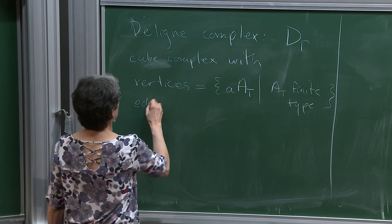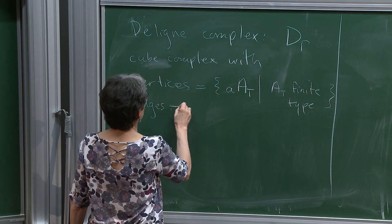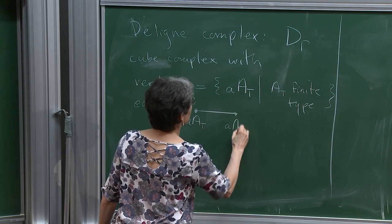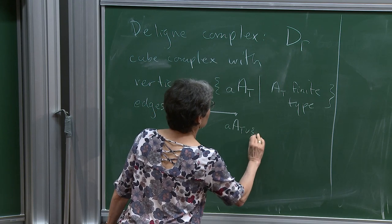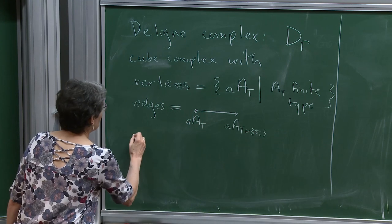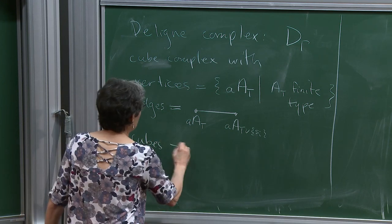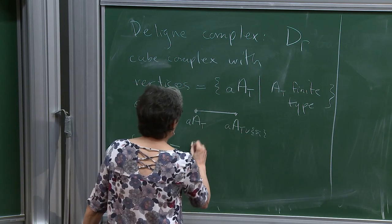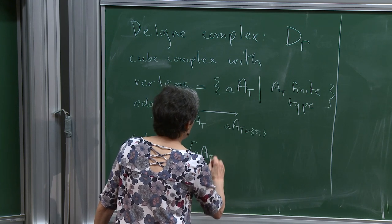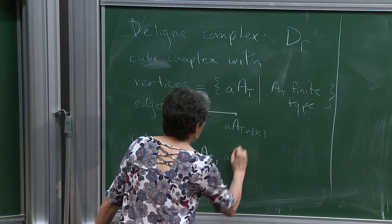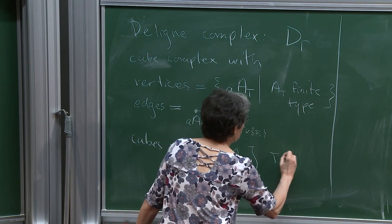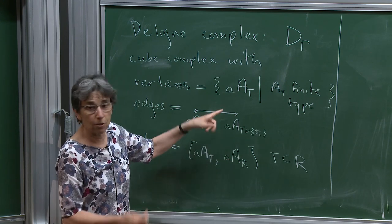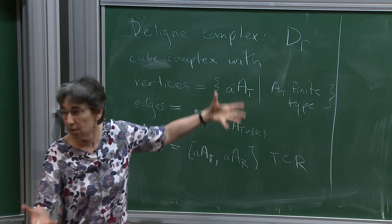Vertices are cosets of finite type special subgroups. Edges are where we get from one coset to another by adding a single generator. Higher dimensional cubes are what I call intervals where we can add more than one thing: A_R where T is contained in R. Adding one thing gives an edge, two things gives a two-cube, three things gives a three-cube, and so on.